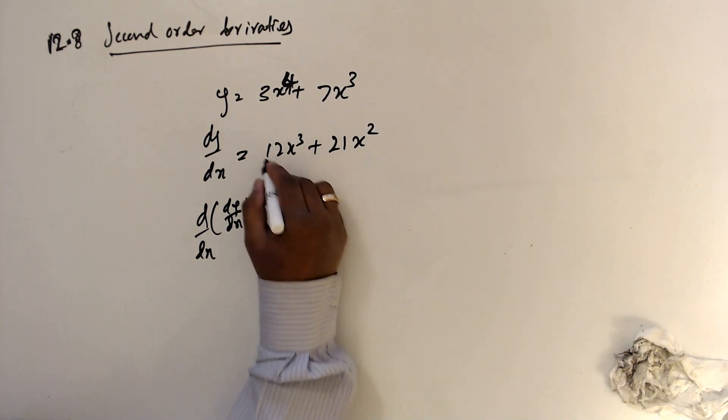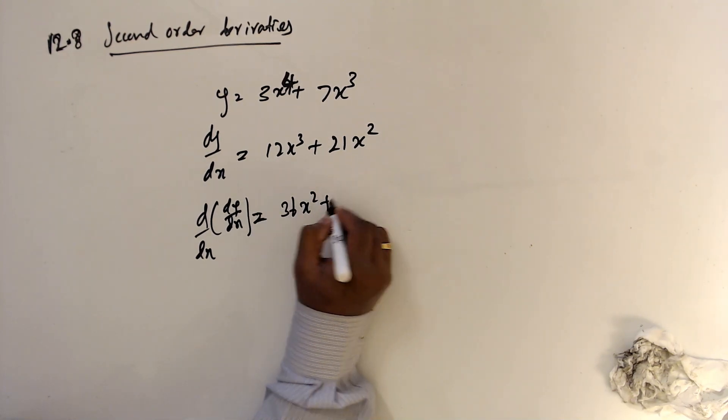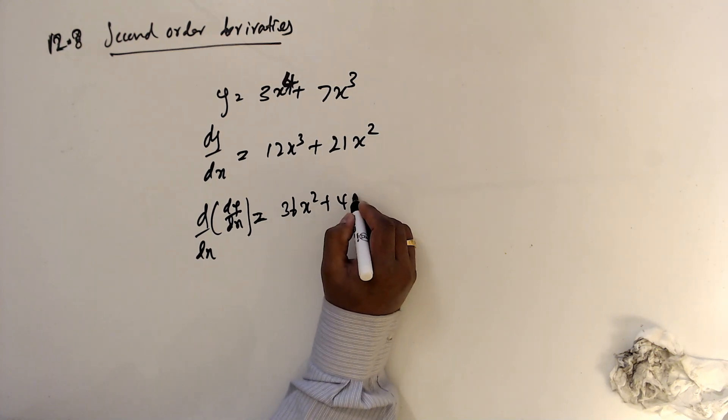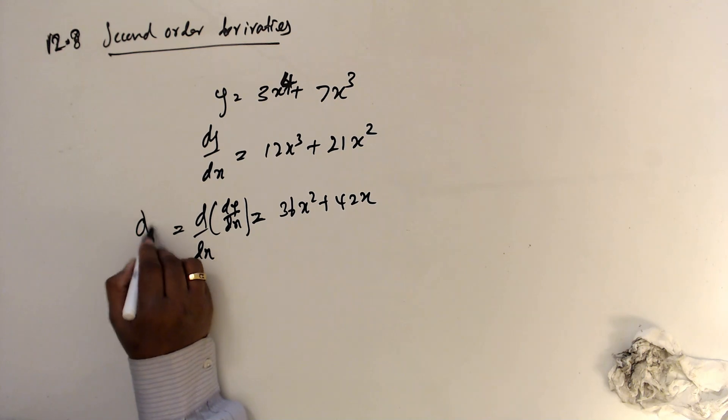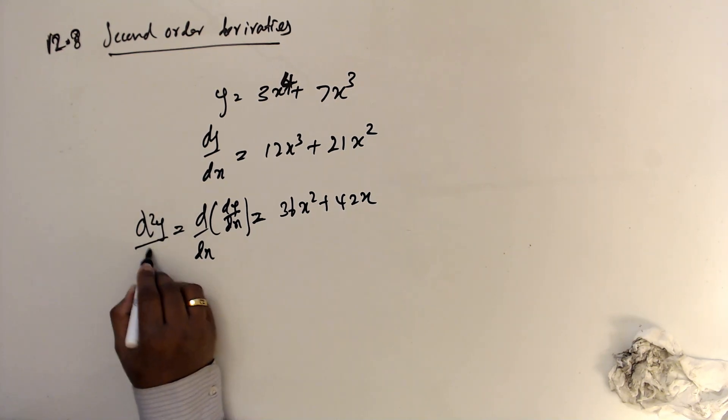So this is going to be 12x, so this is going to be 36. 3 times 12 is 36x squared. Then this is 42x. So this is called d squared y over dx squared.